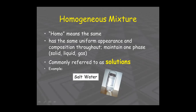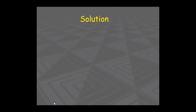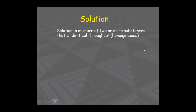A homogeneous mixture has the same appearance or composition throughout and maintains one phase — whether solid, liquid, or gas. For example, salt water: salt is dissolved in water and we can't see the particles. So we call it a uniform mixture. Understanding 'uniform' is important to understand the concept of solution.